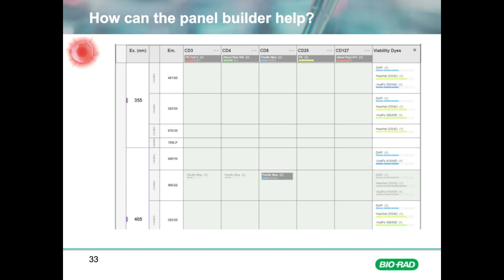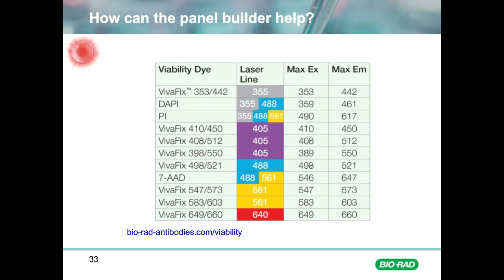The panel builder can help with the choice of viability dye. In addition to viability dyes based on DNA staining, we have a range of fixable viability dyes with a wide range of excitation and emission wavelengths from ultraviolet to infrared. All the viability dyes can be found and selected on the right laser and filter in the panel builder, allowing you to easily incorporate them into your panel no matter the size. For more information, go to bioradantibodies.com/viability.